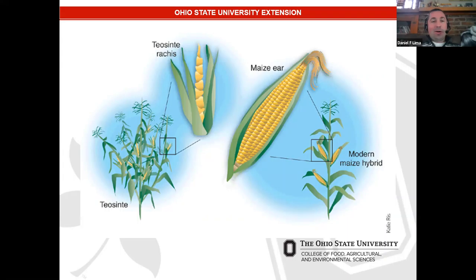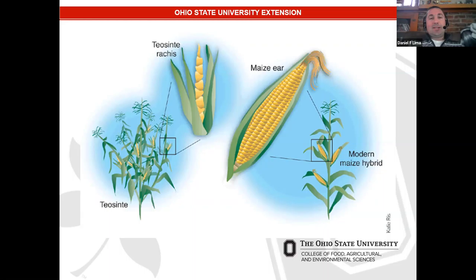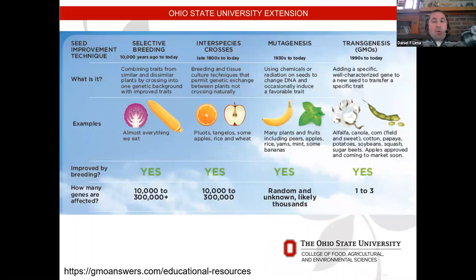A cartoon depicts teosinte and modern corn — the similarities and grand differences. In agriculture, we're breeding for calories above all else, and by doing so we lose other characteristics that make the crop stand alone. That interdependency between humans and crops becomes more and more necessary over time.